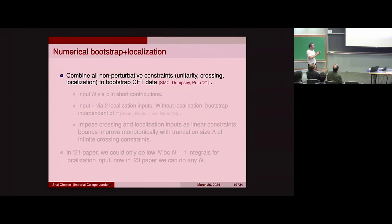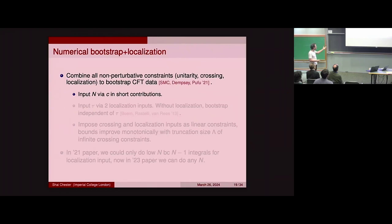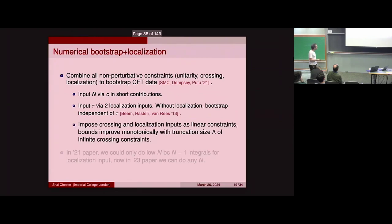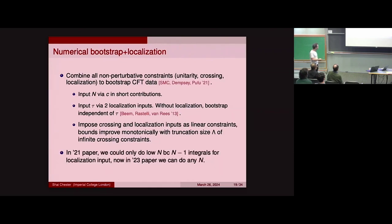Now let's combine all our non-perturbative constraints to solve the theory. We're combining unitarity, crossing symmetry, and localization. N is inputted by the value of C, which appears in the short multiplet contributions. Tau, a single complex parameter, is put in by the two localization inputs — that's why localization is so important, because without it we wouldn't know how to input tau. We then impose both crossing symmetry and the localization inputs as linear constraints. The novelty of the new paper from a few months ago is that now we know how to compute the localization inputs for any value of N, so we can really study the theory for any N and for any coupling.